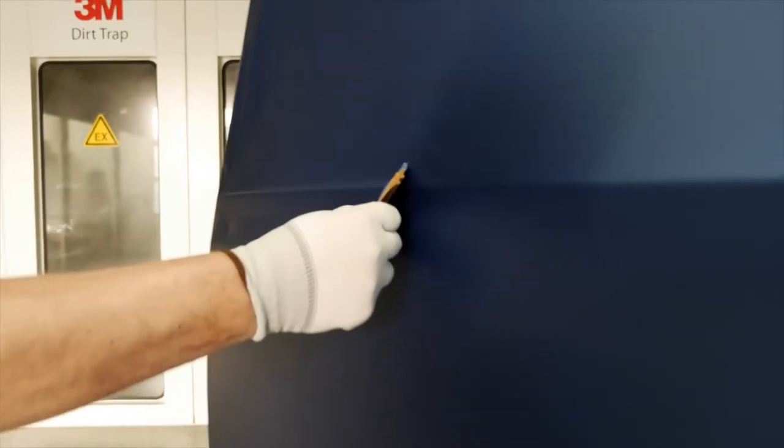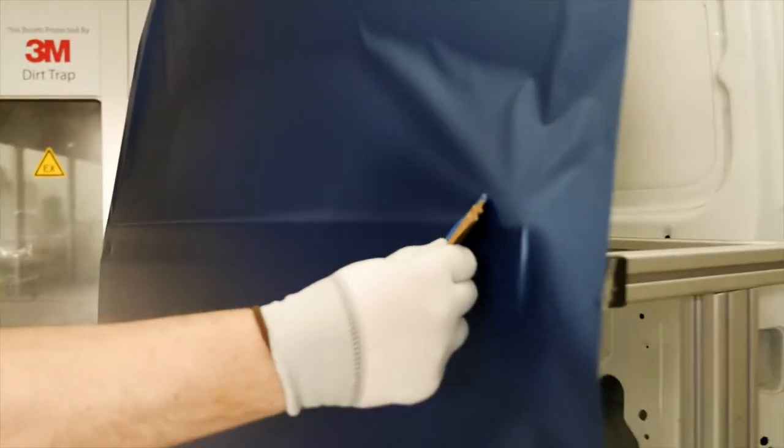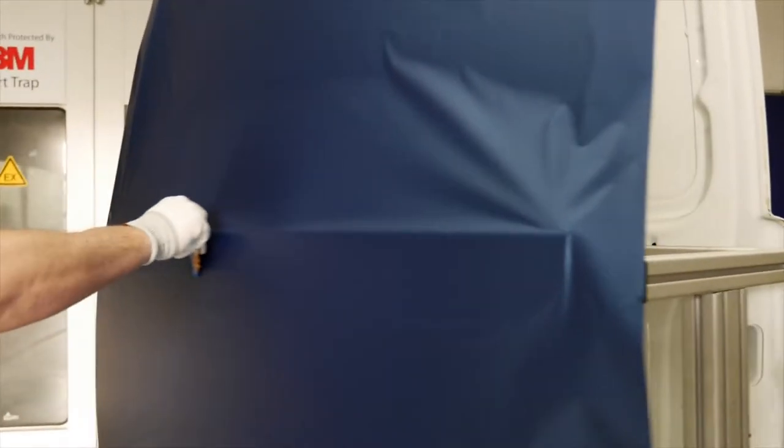Start by fixing the film at the bottom of the panel using the recommended 3M Gold Squeegee with the soft thin sleeve that applies the right amount of pressure.